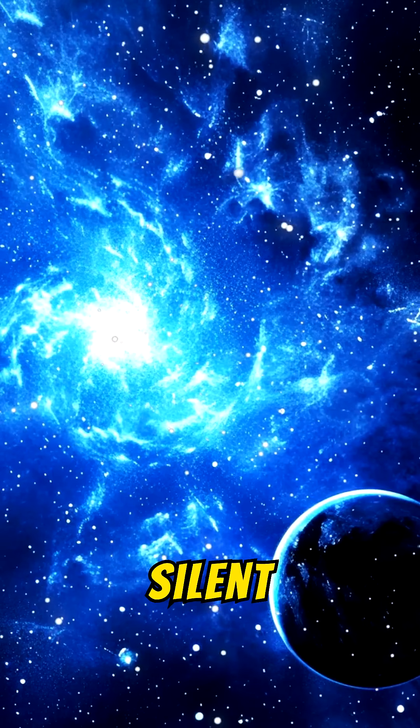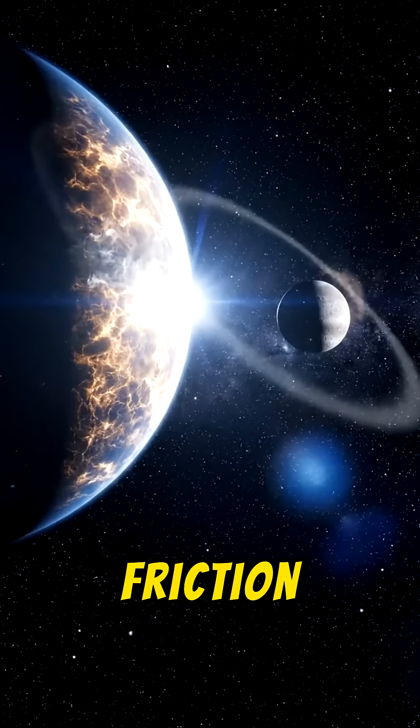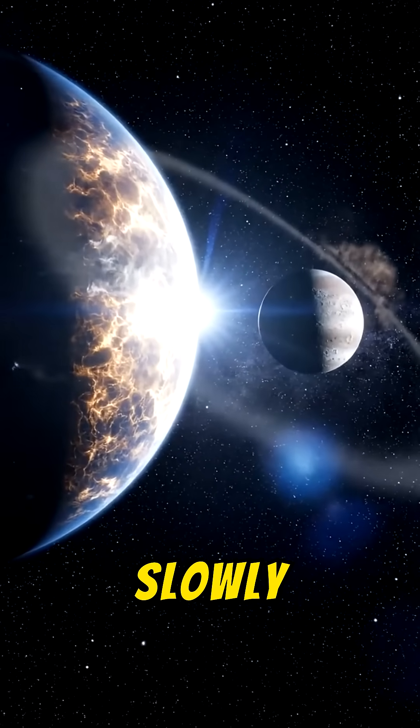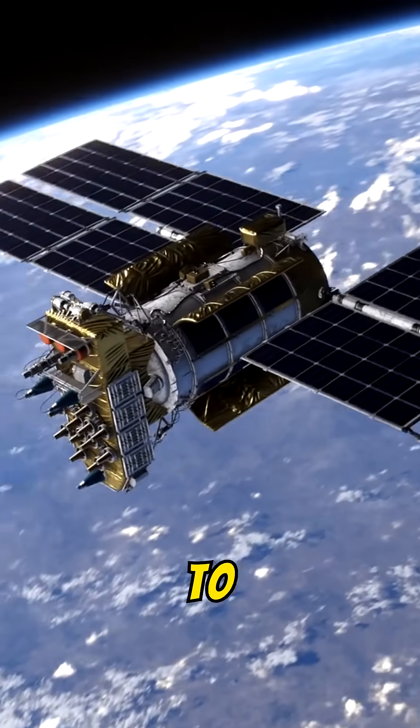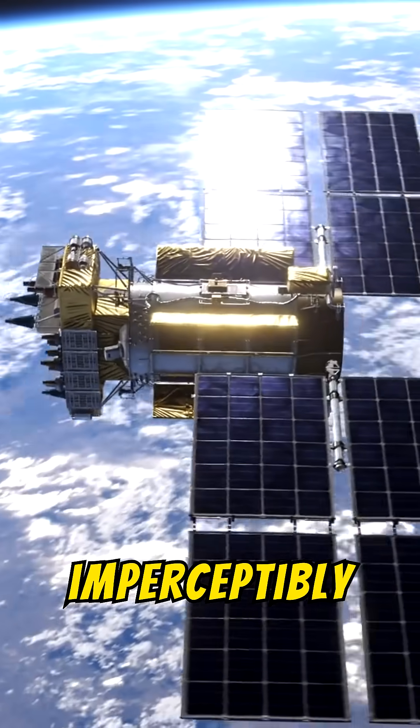Space would still feel silent and vast. But friction means resistance. Every planet would slowly lose orbital energy. Earth's path around the sun would begin to decay, almost imperceptibly at first.